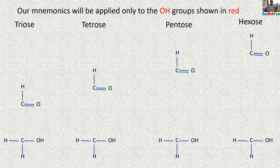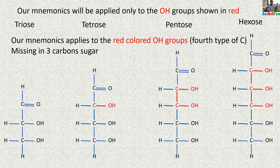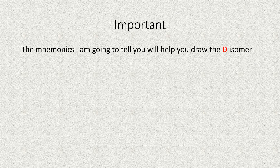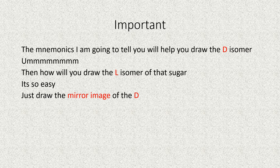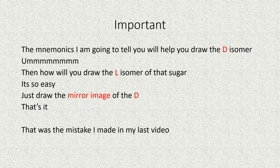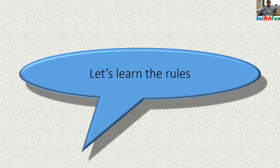Let's compare the structures of trioses, tetroses, pentoses, and hexoses. The mnemonics will apply to the red-colored hydroxyl groups, that is the fourth type of carbons, which are missing in the three-carbon sugar — the triose. The mnemonics I'm going to tell you will help you draw the D isomer of the sugar. To draw the L isomer, just draw the mirror image of the D isomer — that's it.